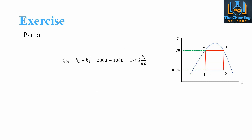Now we can determine Qin, which is the difference H3 − H2 = 1795 kJ/kg. Qout is H1 − H4; since this is heat released by the system it is a negative quantity, giving Qout = −1071.5 kJ/kg.